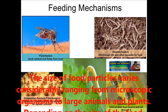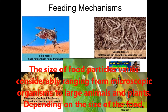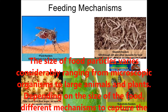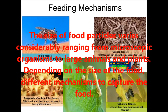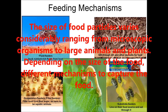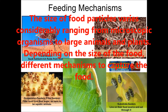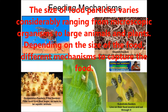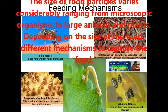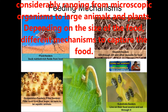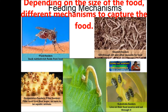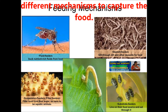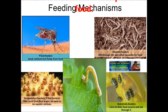The feeding mechanism refers to the fact that the size of food particles varies considerably, ranging from microscopic organisms to large animals and plants. Depending upon the size of the food, different animals have different mechanisms to capture it.